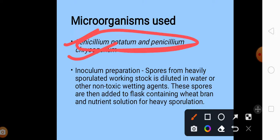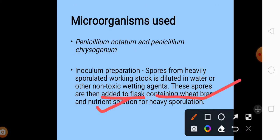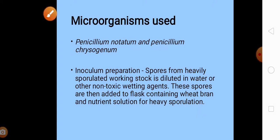Now we will discuss the inoculum preparation. Spores of Penicillium are taken from heavily sporulated working stock, and then these spores are diluted in water or other non-toxic wetting agents. These spores are then added to flask containing wheat bran and nutrient solution for heavy sporulation. The production, the fermentation process of penicillin, is a compulsorily aerobic process. It requires oxygen for its fermentation.